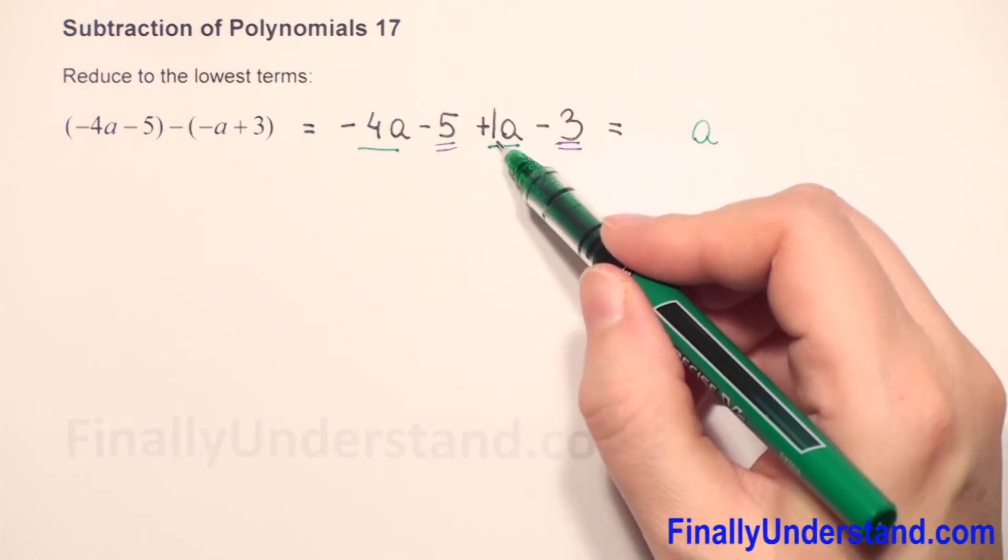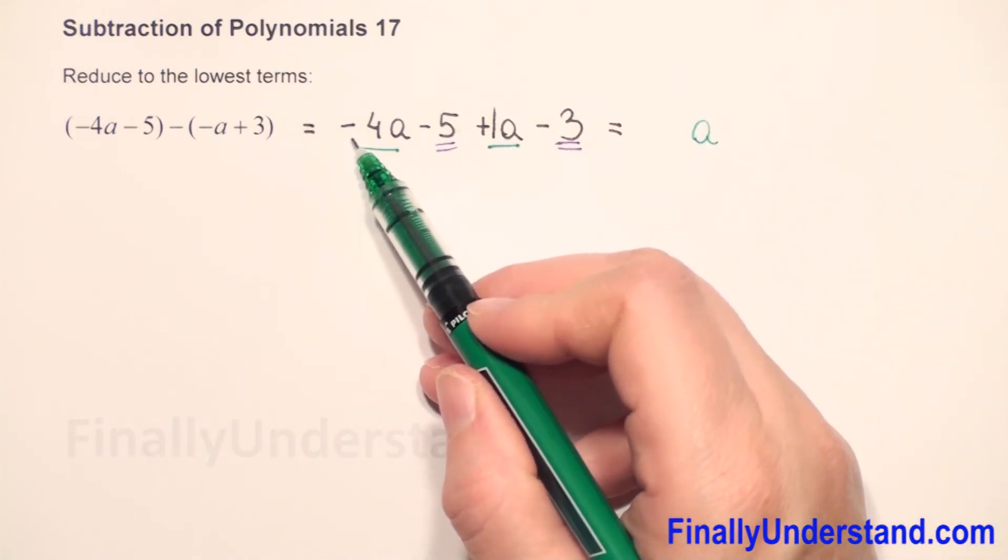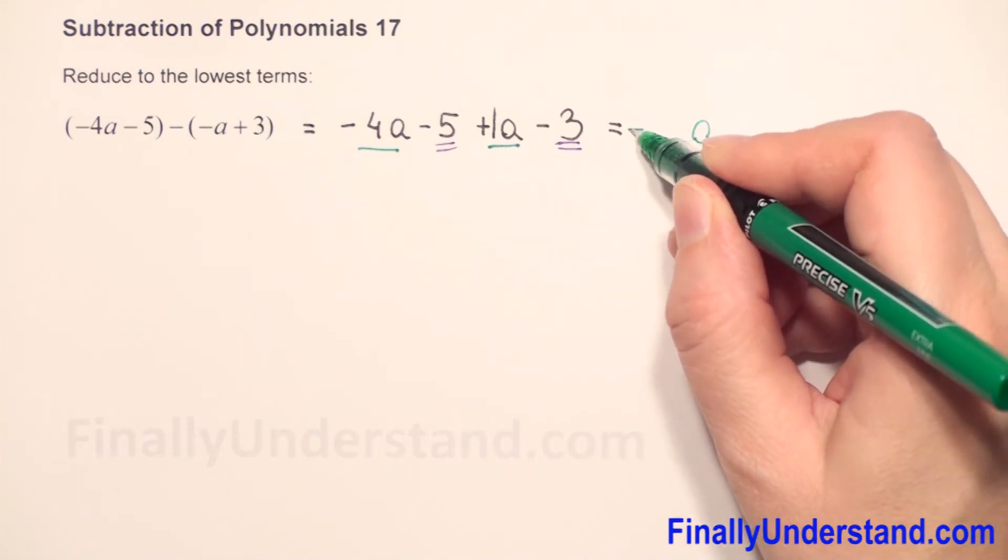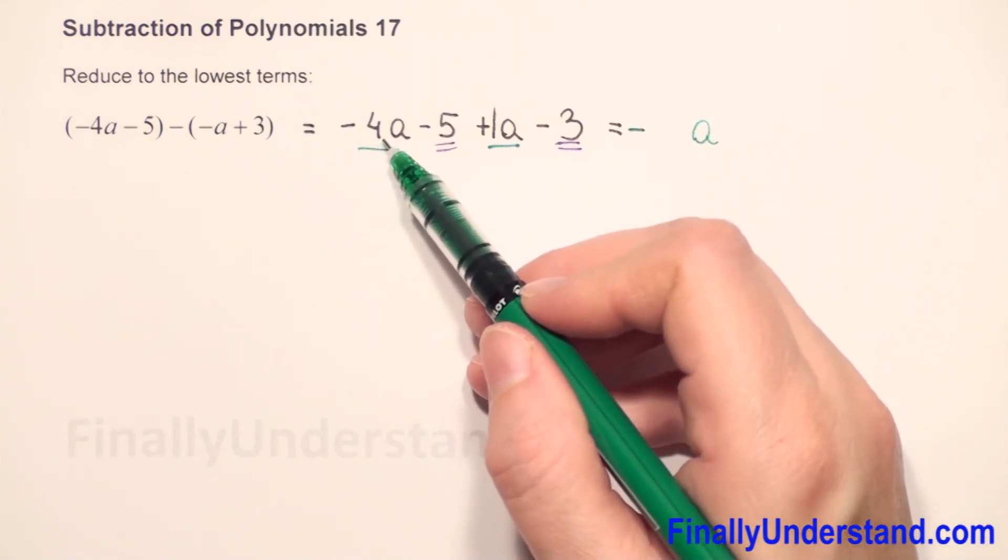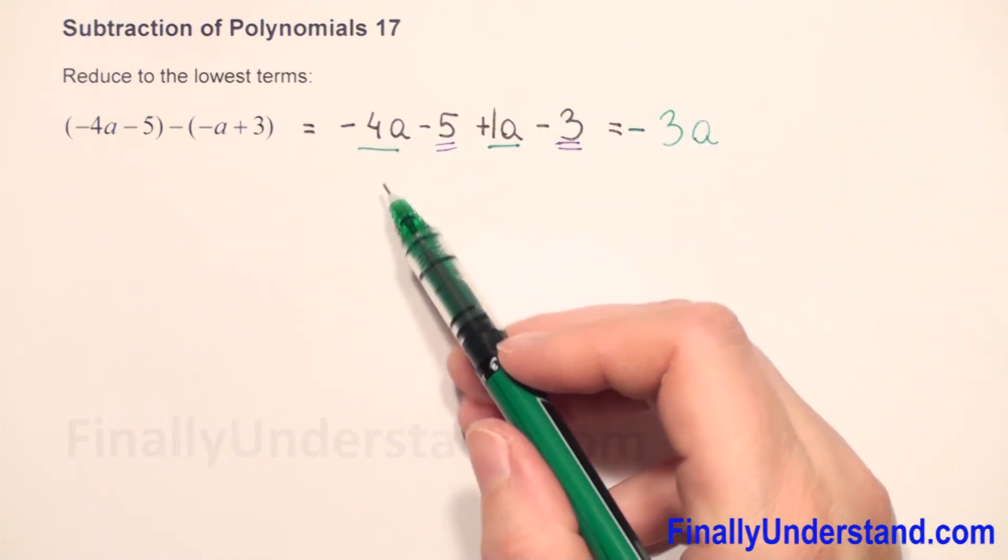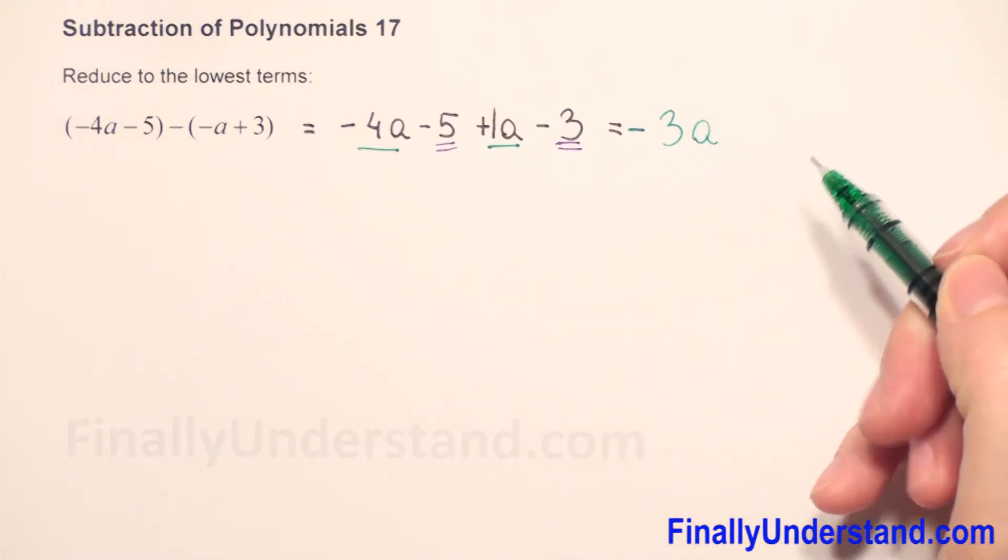We have negative 4 plus 1. We have to keep the sign of the greater number. 4 is greater than 1, so it will be a negative sign. Now we just subtract the numbers: 4 minus 1 is 3. Negative 4a plus 1a is negative 3a.